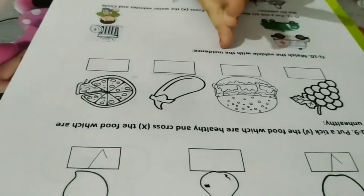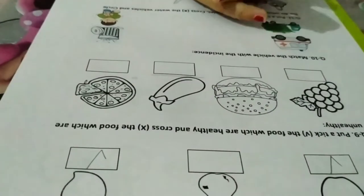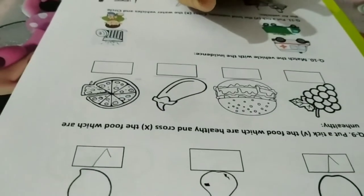Question 9. Put a tick for the food which are healthy and cross the food which are unhealthy.